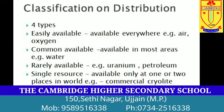So based on distribution they are classified in four main categories. First is easily available resources — these types of resources are easily available everywhere, jaisi air ya phir oxygen, woh har jagah maujud hai. Next is common available resource — yaani woh resource jo zyaadatar ilaaqon par available hai, jaisi water. Agla hai rarely available resource — matlab woh resources jo bahut hi kam jagahon par available hai, jaisi uranium, petroleum, etc. Aur aakhri hai single resource — that means these resources are available only at one or two places in the world. For example, commercial cryolite metal which is found only in Greenland in the natural form.